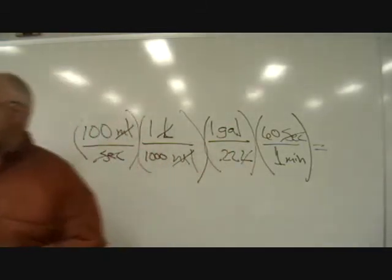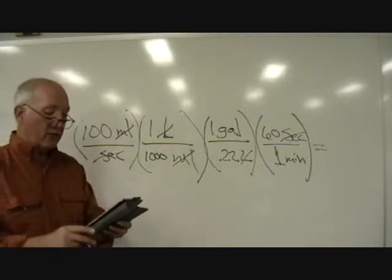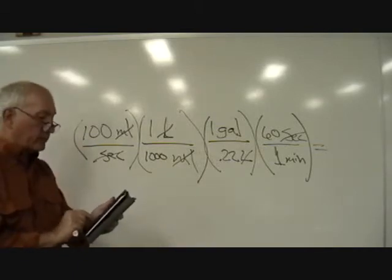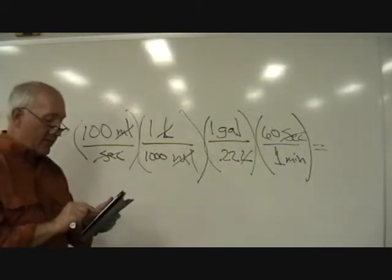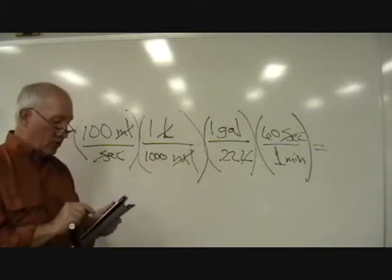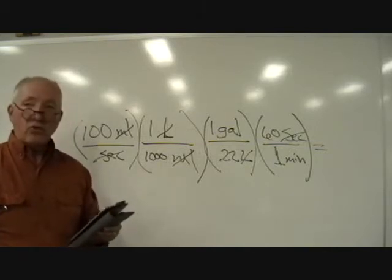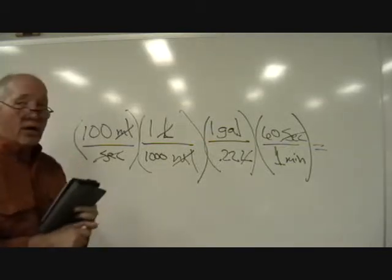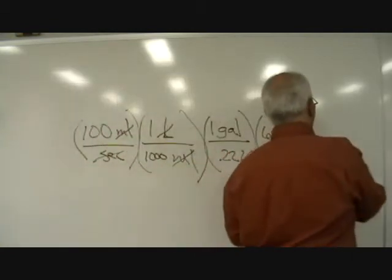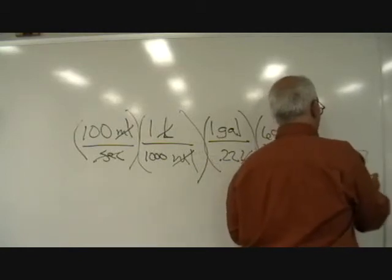Now all I have to do is grab my calculator, multiply all the way through across the top, divide through across the bottom, and we will know how many gallons per minute of flow rate this is. So I'm going to start with 100 times one times one times 60, then divided by a thousand divided by 0.22 divided by one equals, and I end up with 27.27 gallons per minute. So that 100 milliliters per second gives me 27.27 GPM gallons per minute.